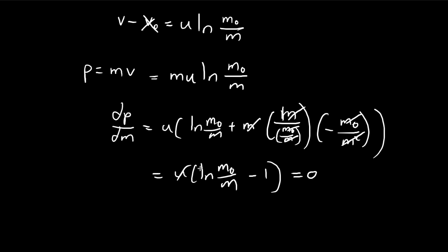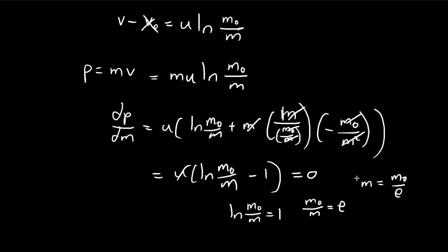We can divide u over to the other side, giving us natural log of m0 over m equals 1. This implies that m0 over m equals e, the constant 2.71. So m is equal to m0 over e. When the mass equals the initial mass divided by the constant e, the momentum will be maximized.